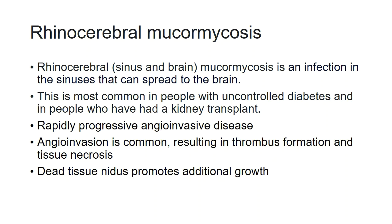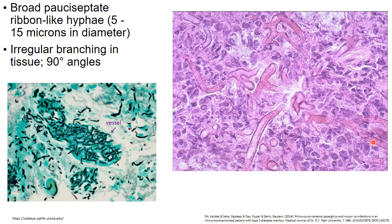Coming to rhinocerebral mucormycosis: this is an infection of the sinuses that can spread to the brain, most common in uncontrolled diabetes mellitus and renal transplant patients. It rapidly progresses and is an angioinvasive disease; the angioinvasion results in thrombus formation and tissue necrosis, and this dead tissue nidus promotes additional growth of the Mucor. Mucor shows irregular branching hyphae branching at 90 degrees; they are broad, pauciseptate (aseptate). Their angioinvasive property is highlighted by the Grocott-Gömöri methenamine silver (GMS) stain.